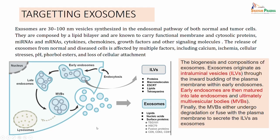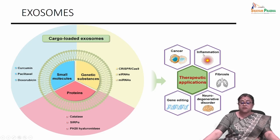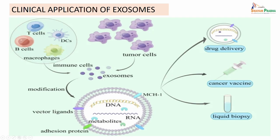Now let us see how we can exploit this in treatment. These exosomes, because they contain a lipid bilayer, can be used as a cargo. You could load them with small molecules or genetic substances or proteins, and they can be used for therapeutic application - not only for cancer, but also inflammation and fibrosis. Any kind of therapeutic application can be explored in these exosomes. These exosomes can be packed with DNA or some metabolites and then used for drug delivery. They can be used as a cancer vaccine, and because they are secreted in the blood they can be identified in liquid biopsy.